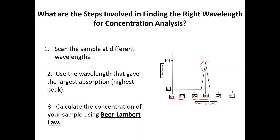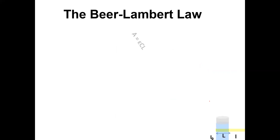To measure protein concentration, we use a formula called the Beer-Lambert Law. If you remember from the last lecture, we discussed the relationship between pH and H+ concentration — an inverse relationship. As we increase the proton concentration, we decrease the pH because of the negative sign, and vice versa.